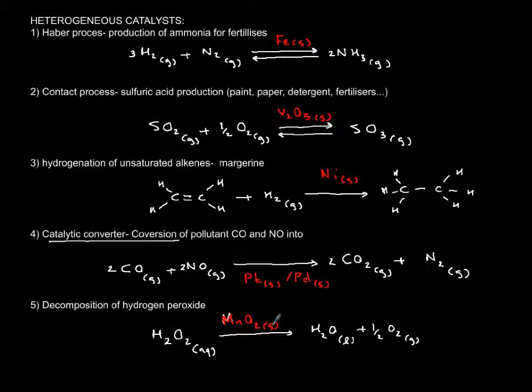So these are some examples of transition metals used as catalysts because of their variable oxidation states and their electron configuration.